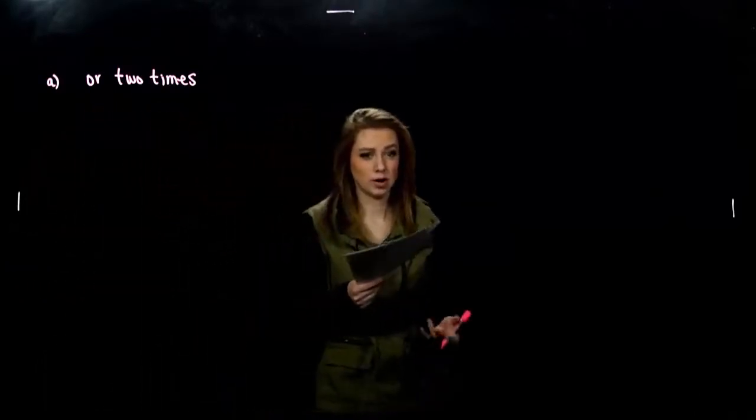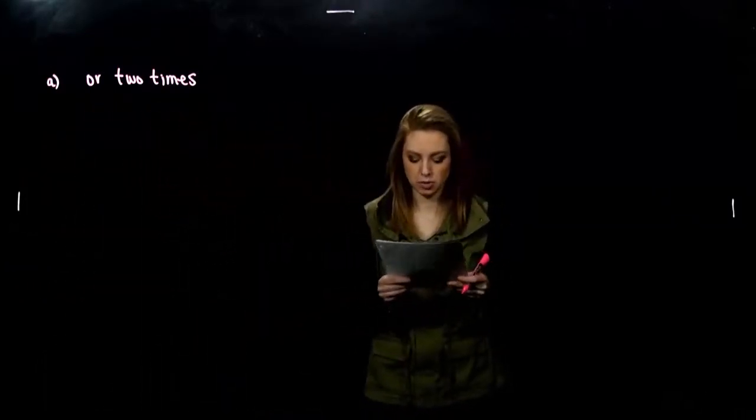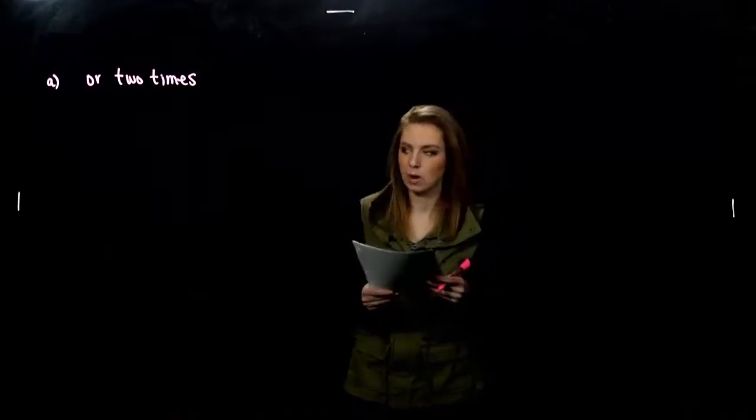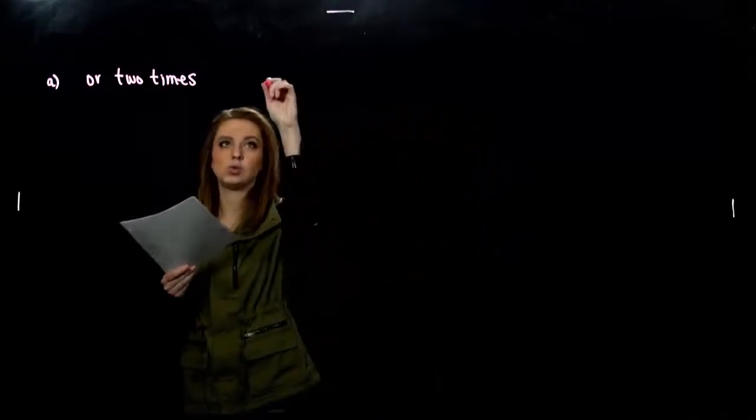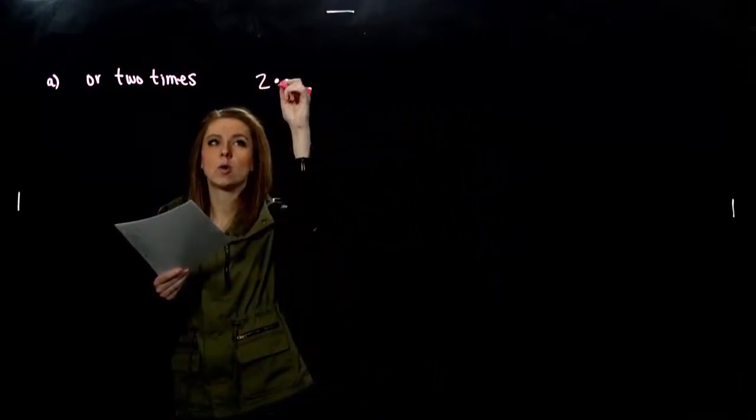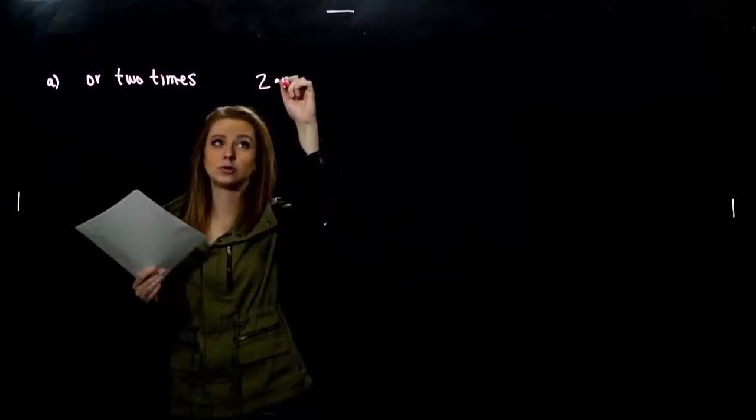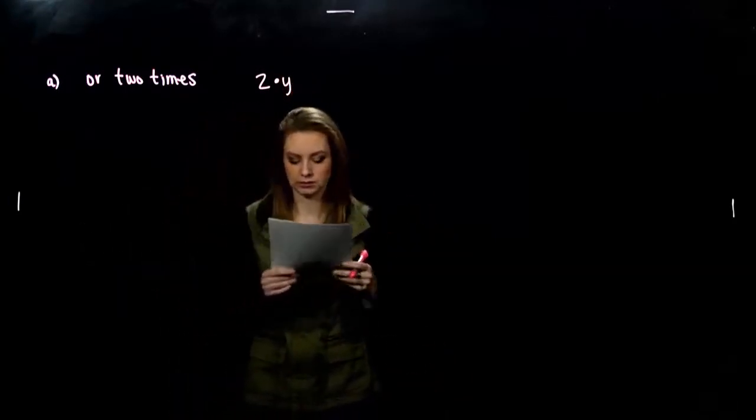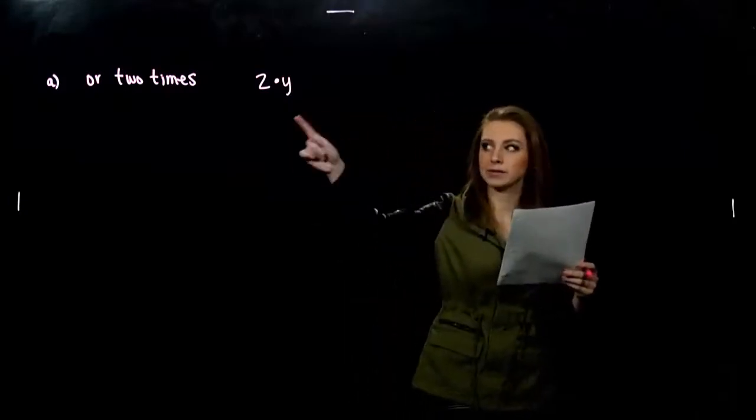So we can assign a variable to our unknown. It doesn't matter which one you pick. I'm going to choose y. So what am I asking? Two times the quantity, some number, some unknown. Two times y. That satisfies my expression, twice some number.